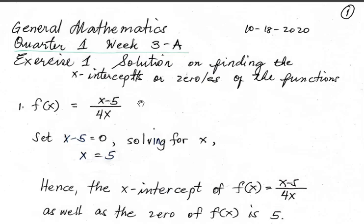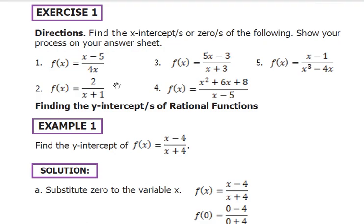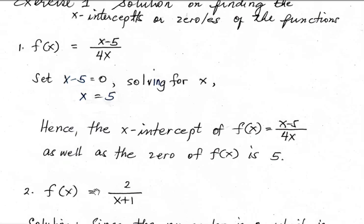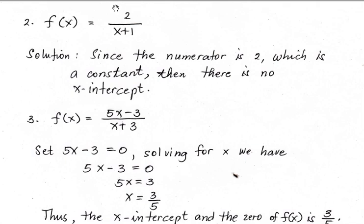Number 1: f(x) equals (x minus 5) all over 4x. Set x minus 5 equals 0 and solve for x. Hence, x equals 5 is the x-intercept. For Number 2, f(x) equals 2 over (x plus 1). Since the numerator is a constant, there is no x-intercept — meaning the graph of this function will not touch the x-axis.